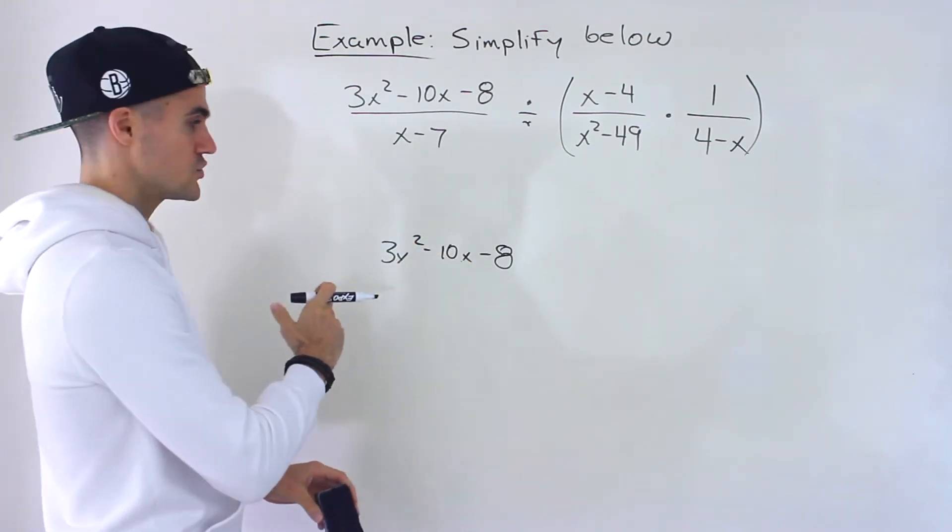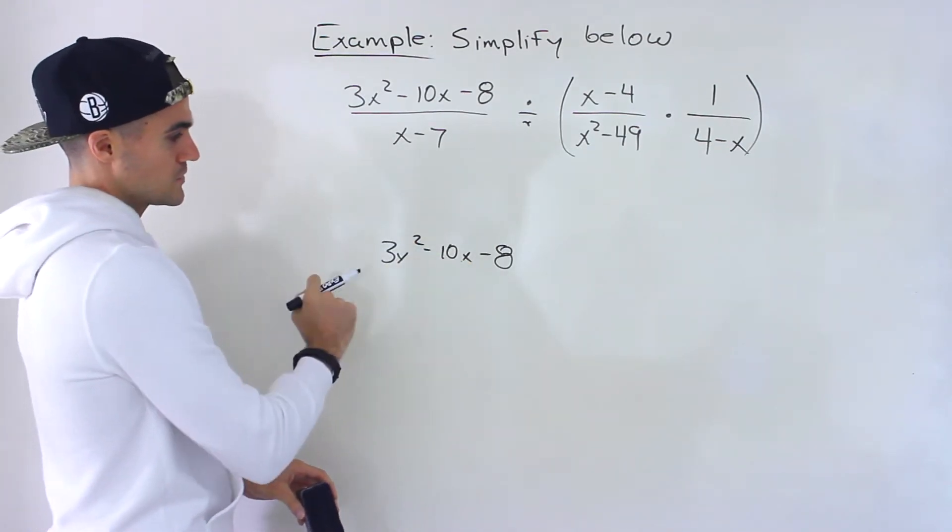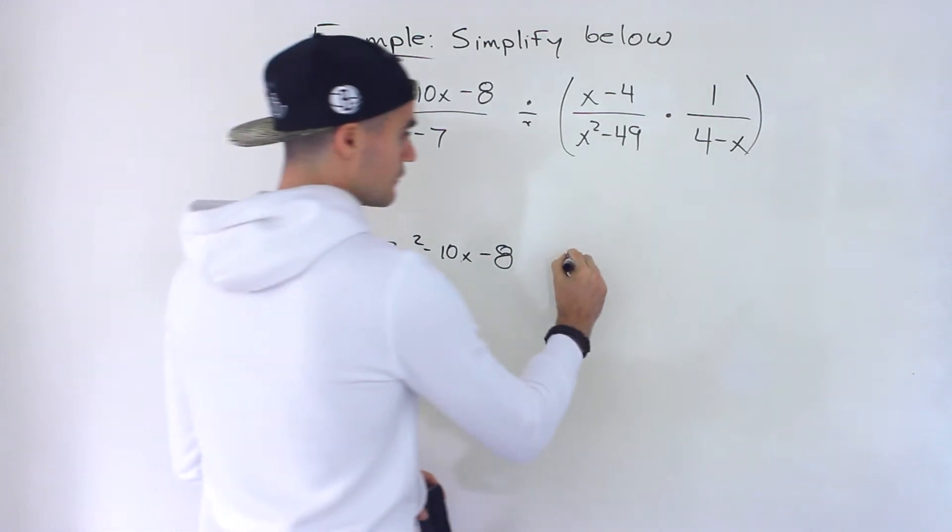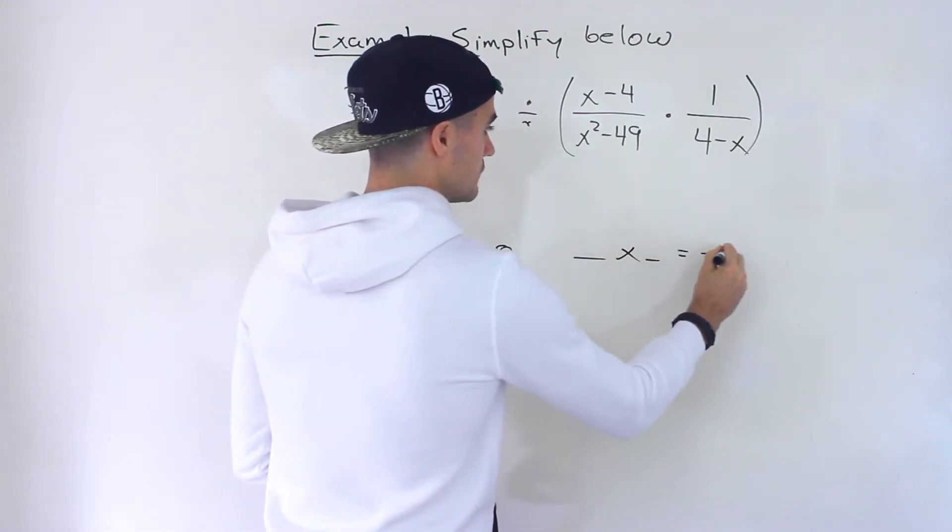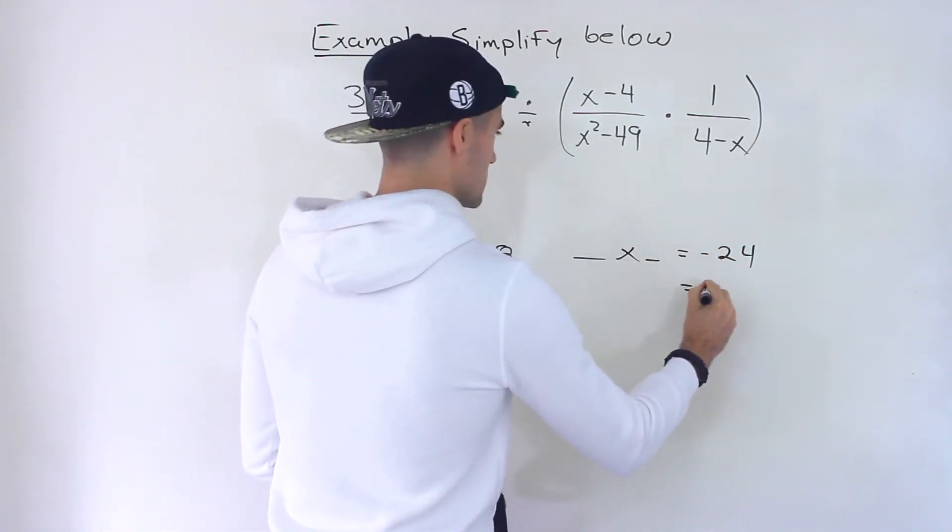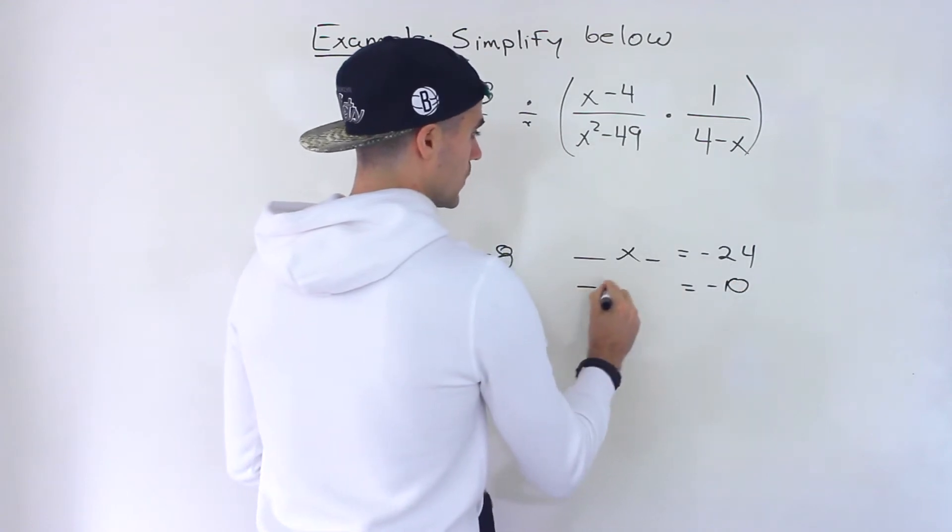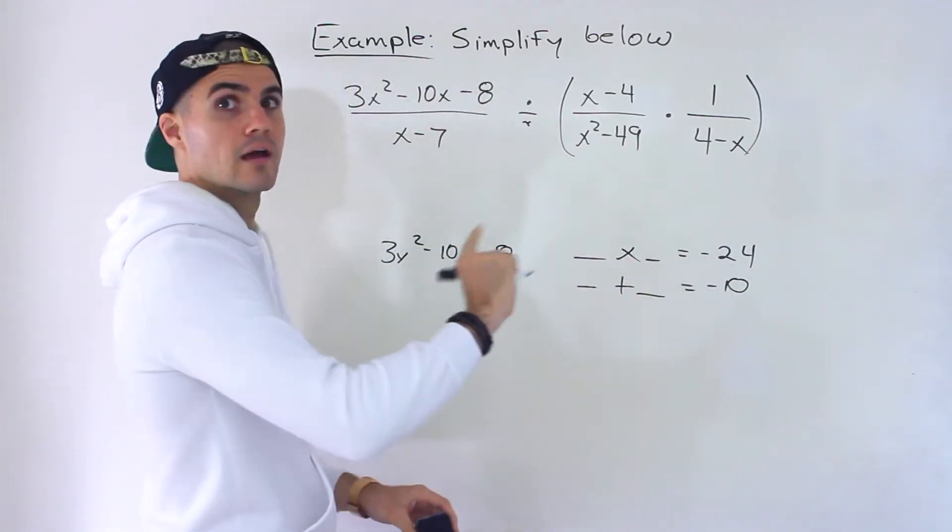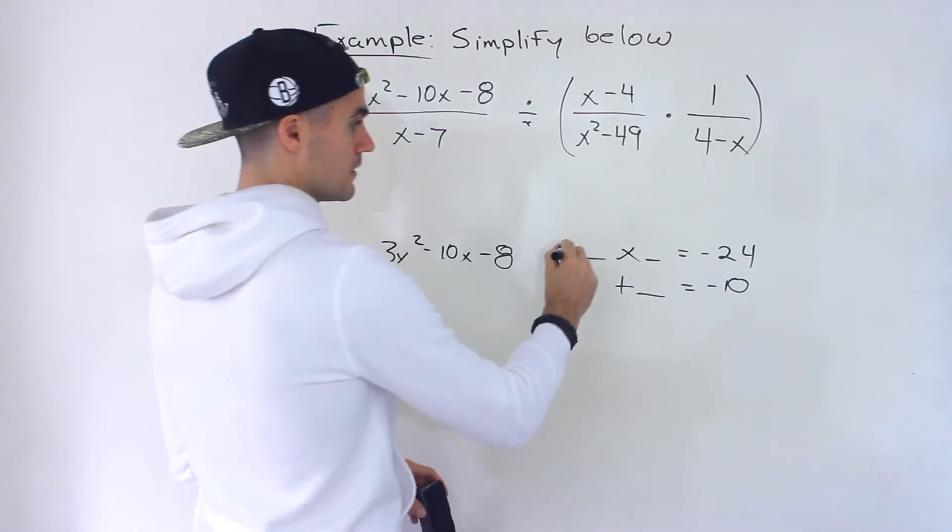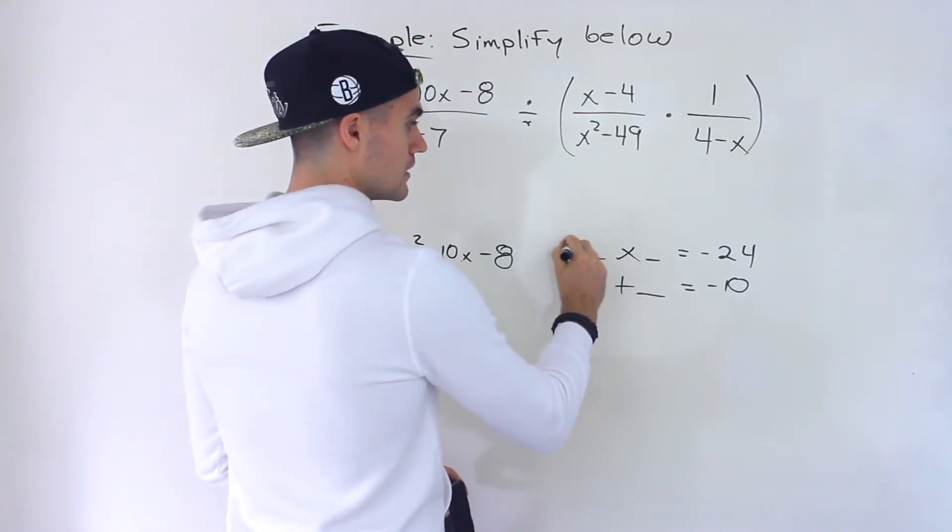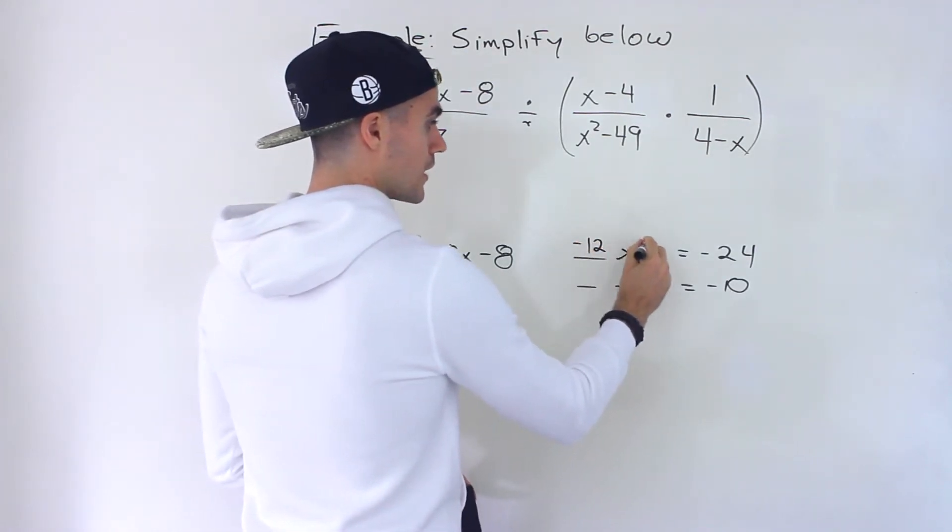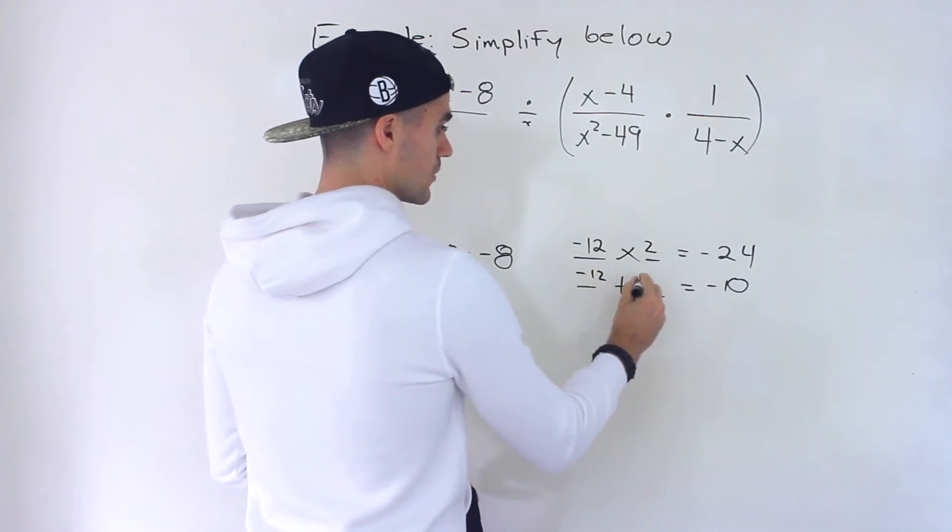Well notice we can't take anything out initially so we would factor this with decomposition. So 3 times negative 8 would give us negative 24 and then notice the b value is negative 10. So what two numbers multiply to negative 24 add up to negative 10? It would be negative 12 and positive 2.